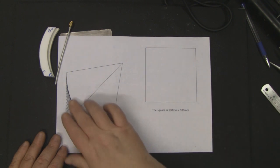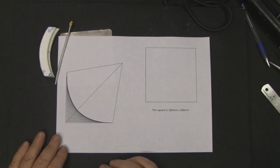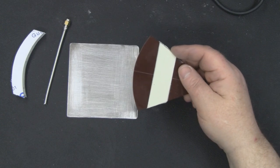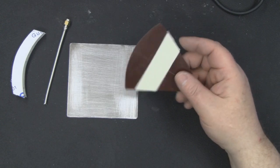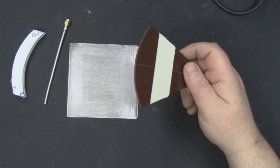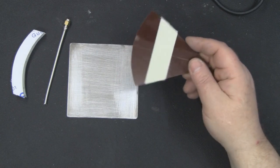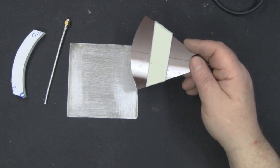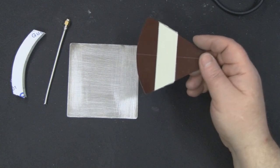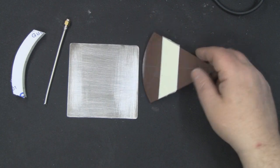You really want to cut your template out using some thick card or like I have here, a piece of perspex. The perspex is going to last a lot longer, but if you're only making a couple of these antennas then card will suffice.